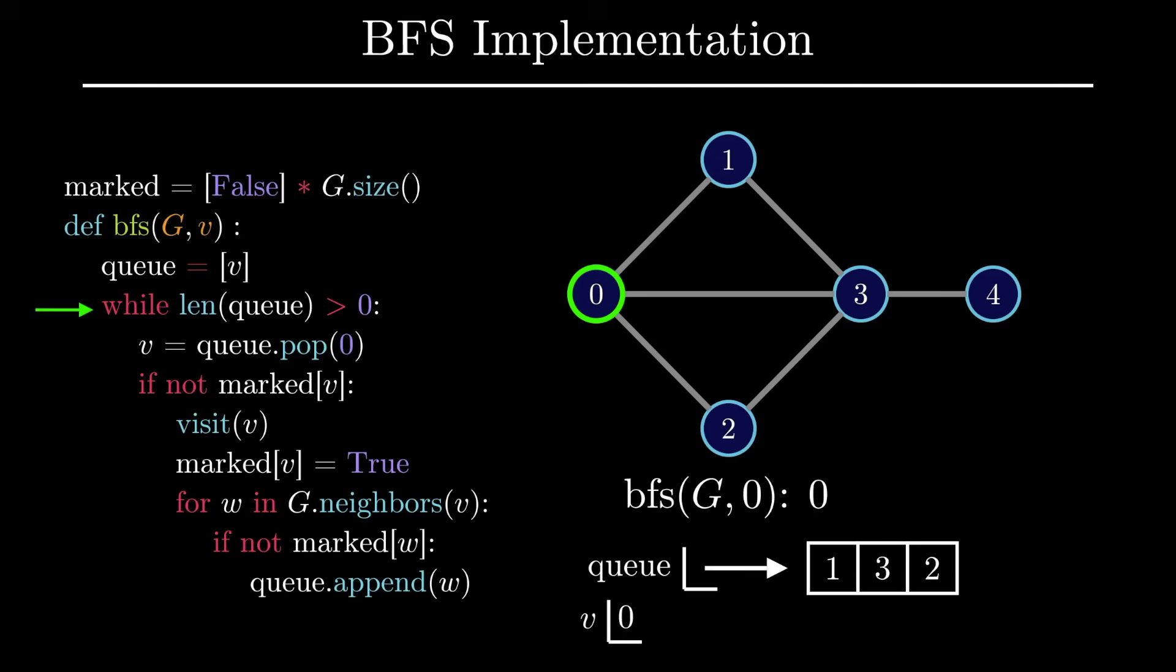The next vertex we pop off is vertex 1 since it is at the front of the queue. This vertex is then visited and marked, making it the second vertex in the BFS order. We then iterate through all vertex 1's neighbors, of which only vertex 3 is added since it is the only neighbor that is unmarked.